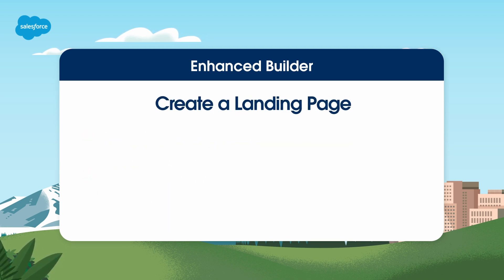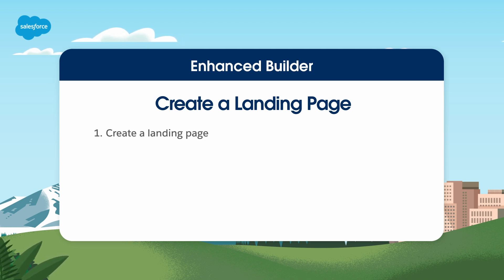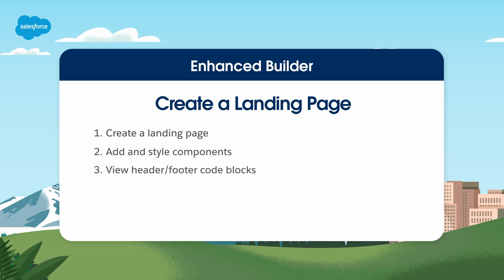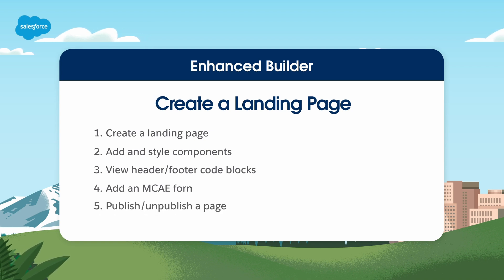As we proceed with creating our landing page, we'll focus on five key areas of the enhanced builder: creating a landing page, adding and styling components, exploring header and footer code blocks, incorporating a Marketing Cloud Account Engagement form, and finally, publishing and unpublishing the landing page.